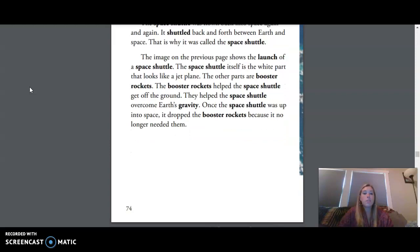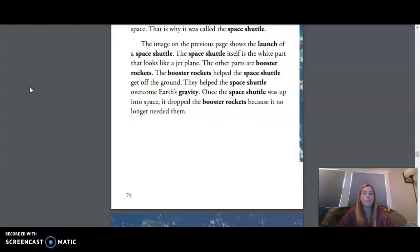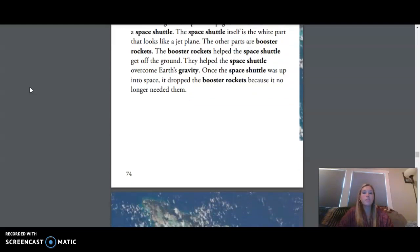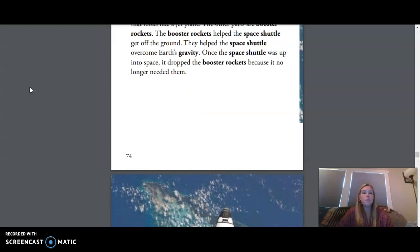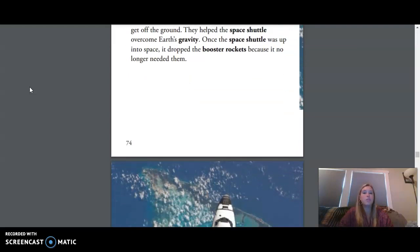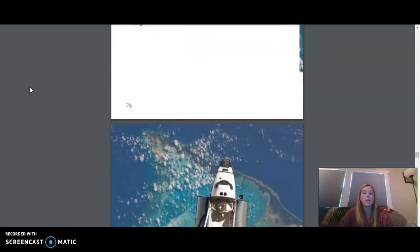The image on the previous page shows the launch of a Space Shuttle. The Space Shuttle itself is the white part that looks like a jet plane. The other parts are booster rockets. The booster rockets help the Space Shuttle get off the ground. They helped the Space Shuttle overcome Earth's gravity. Once the Space Shuttle was up into space, it dropped the booster rockets because it no longer needed them.